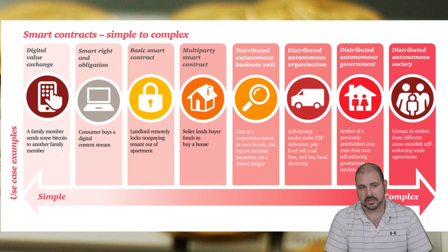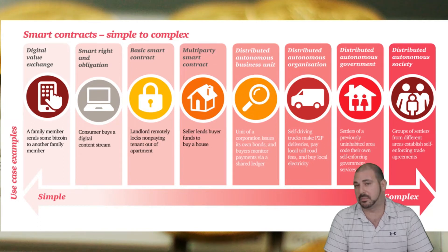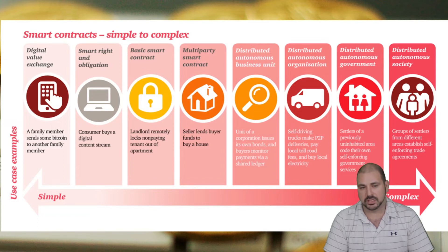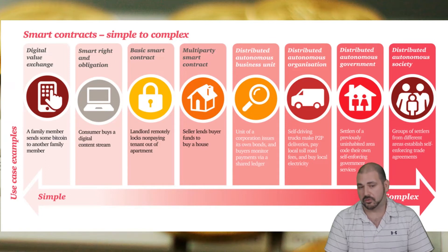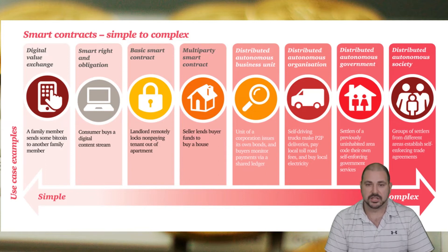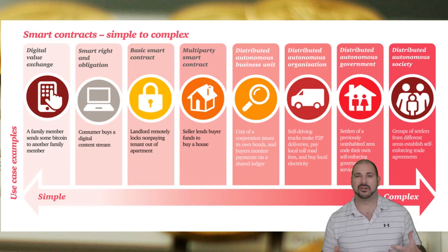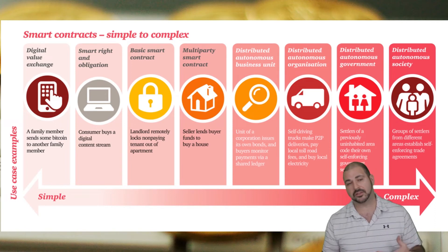Smart contracts can range from very simple to very complex. Uses include digital value exchange, obligation by digital content stream, a basic landlord contract that remotely locks out a non-paying tenant, multi-party contracts where a lender funds a buyer to purchase a house and they pay over time with interest, distributed autonomous business units that issue bonds and monitor payments via a shared ledger, distributed autonomous organizations like self-driving trucks with peer-to-peer deliveries paying local tolls, and even distributed autonomous government with blockchain voting.